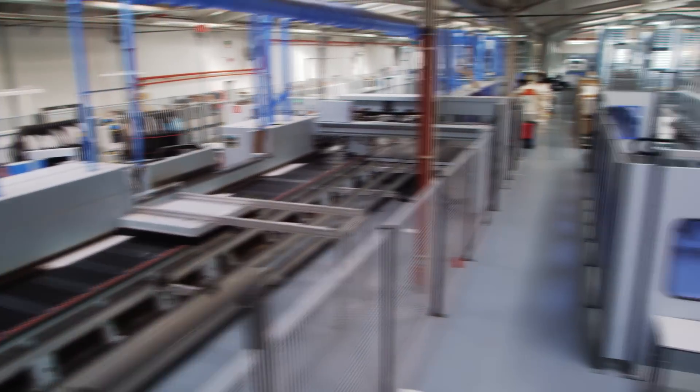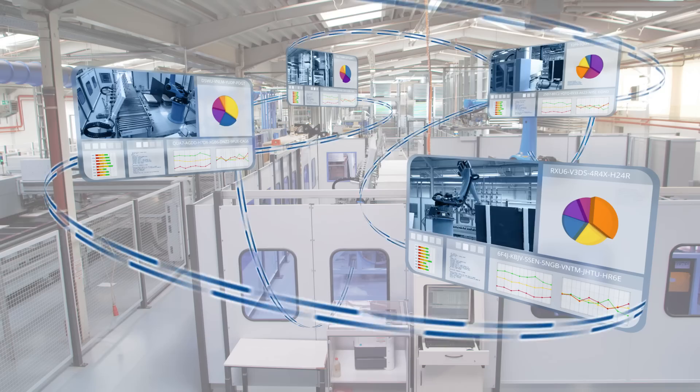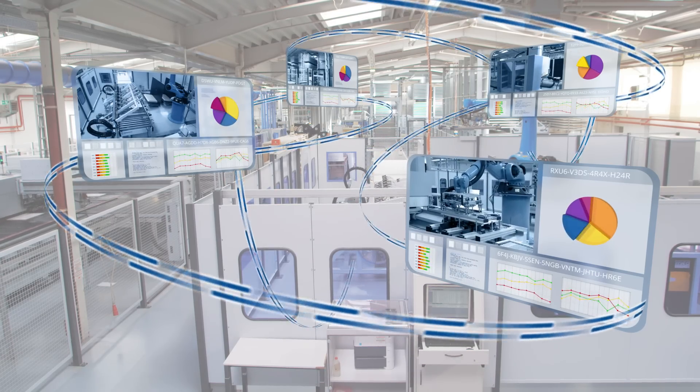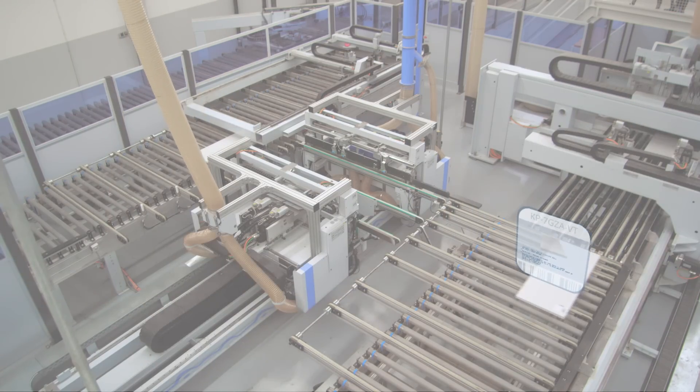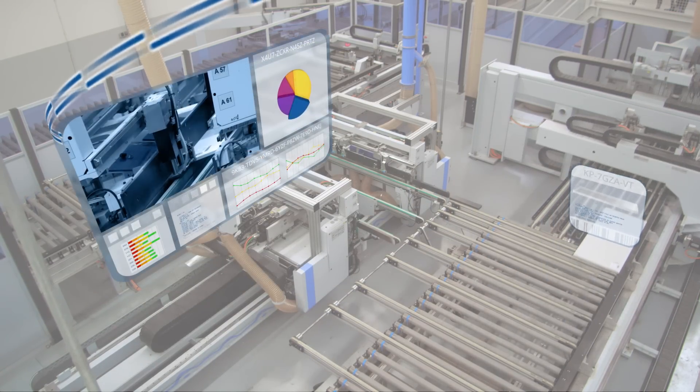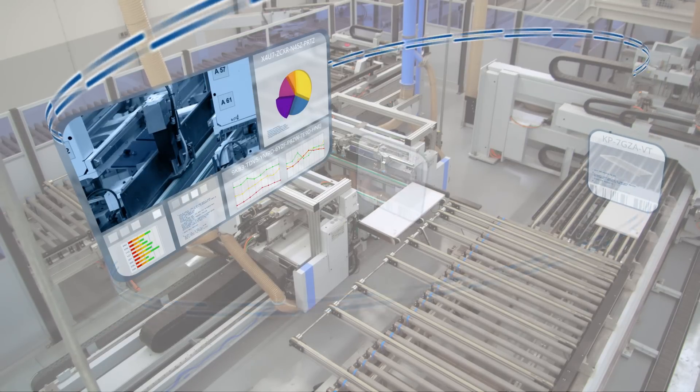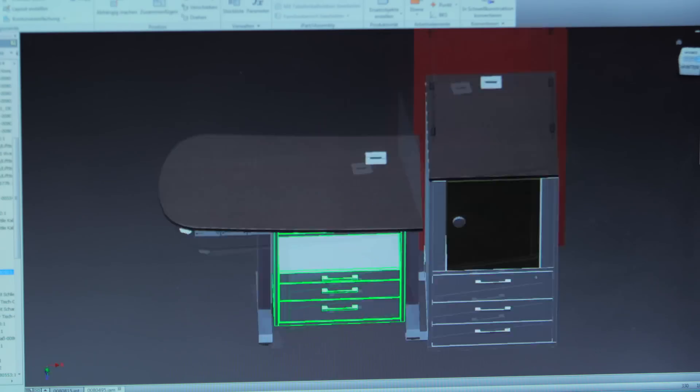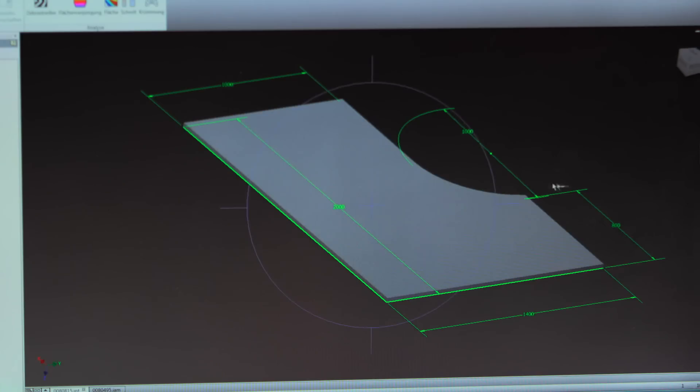For this to work smoothly, it is important for all components involved in the production process to communicate with each other. Information flows are efficiently organized and monitored by a production control system. The central element in this production is the smart workpiece. It tells the machine how it has to process. Every workpiece is individual and is created as a digital component in the virtual world.